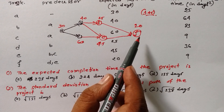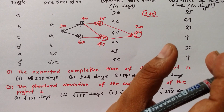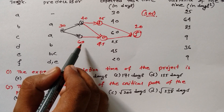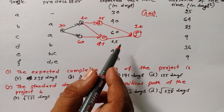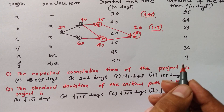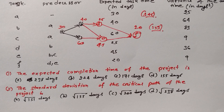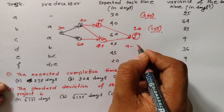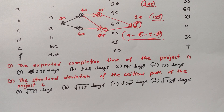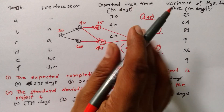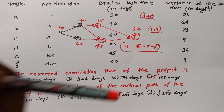Another path gives 70 + 45 + 20 = 135, which is 125 — less than 145, so we don't need to consider it. The path A→C→E→F = 30 + 60 = 90, + 45 = 135, + 25 = 155 days. This path takes the maximum number of days — this is the critical path. So A-C-E-F is our critical path, and the expected completion time is 155 days.